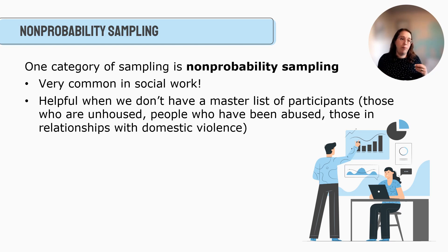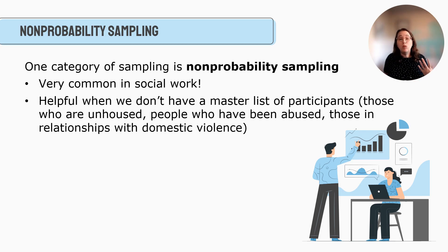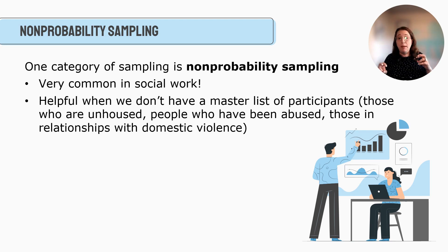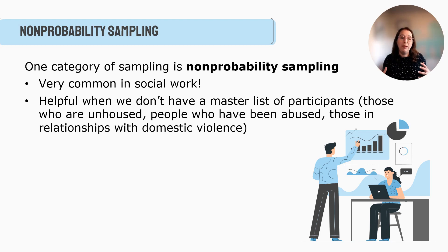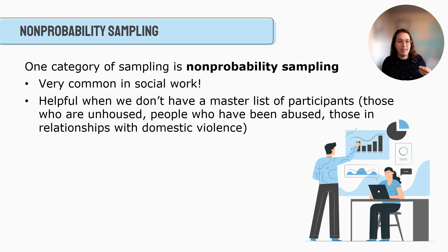Now we'll talk about non-probability sampling, which is very common in social work. A lot of times we don't have a sampling frame for very vulnerable or marginalized individuals. There may not be a master list of people who are undocumented, or of people who are unhoused, or those who have been abused or are experiencing domestic violence. Because of the safety of clients or by the nature of who they are, we may not have one — so non-probability sampling becomes really common in social work for that reason.